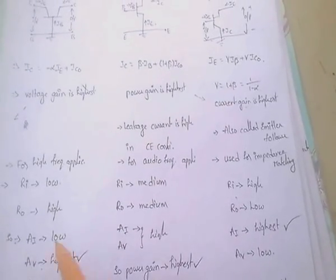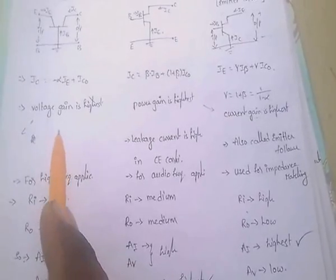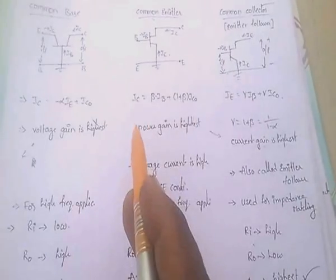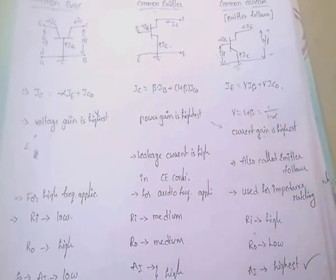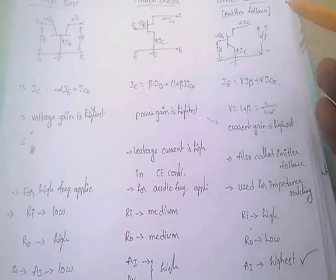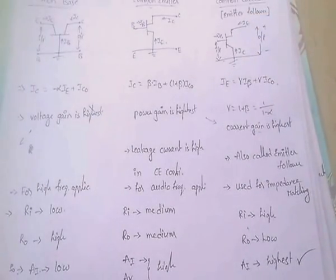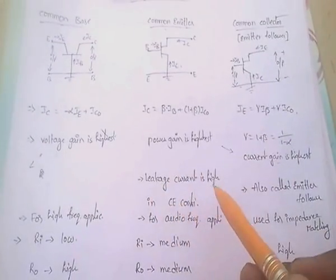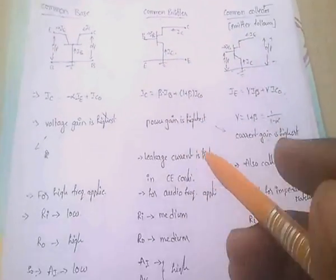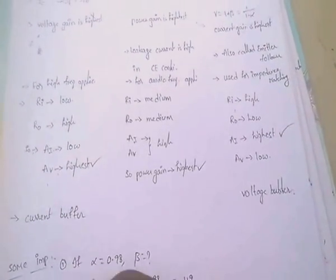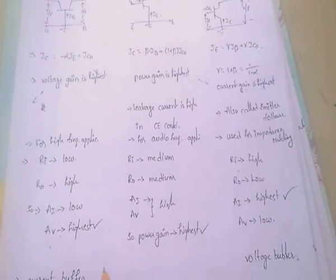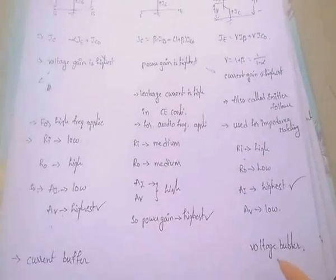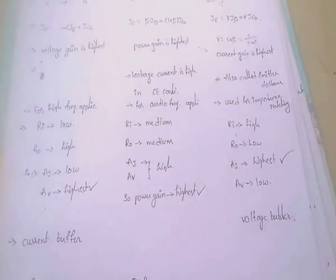To summarize: common base is known for voltage gain; common emitter is known for power gain; common collector is known for current gain. Common collector is also called emitter follower — very important. The leakage current is highest in common emitter. Common base is called a current buffer, and common collector is called a voltage buffer.